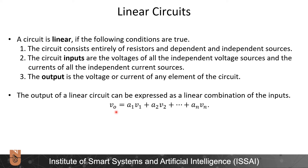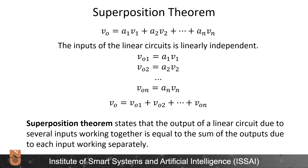So Vout is some constant times V1, one of the inputs, plus some constant A2 times V2, and so on until the last input Vn. Of course our inputs could also be current. The inputs of the linear circuits are linearly independent — this is a concept from linear algebra.